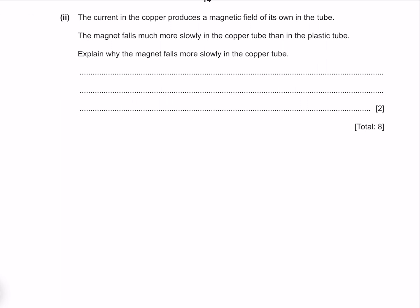The current in the copper produces a magnetic field of its own in the tube. The magnet falls much more slowly in the copper tube than in the plastic tube. Explain why the magnet falls more slowly in the copper tube. A repulsive force between the magnet and the tube is created as their magnetic fields interact.